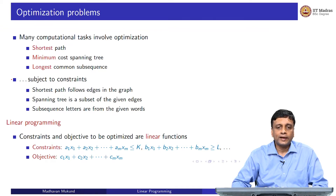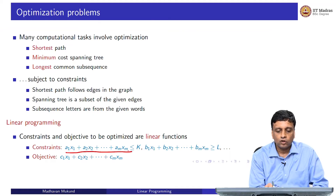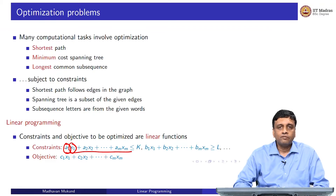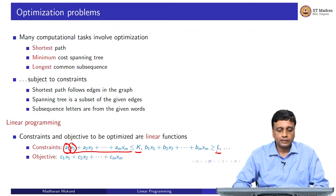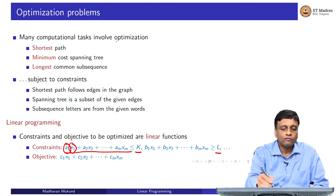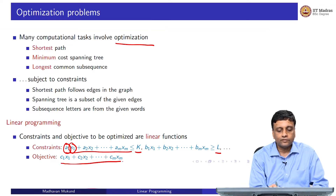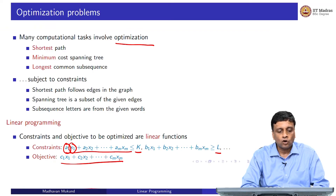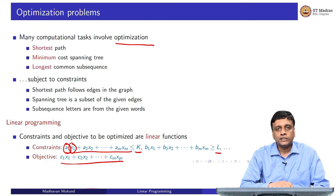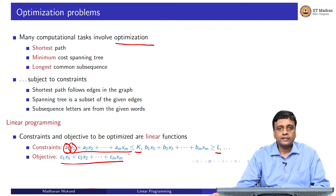Supposing we have input variables x1 to xm, a linear constraint would be of this form: some linear combination with coefficients ai and variables xi, added up together, is either below some value or above some value. The constraint could be a maximum constraint — no more than something — or no less than something. Subject to these constraints, we have to optimize. The optimization is given in terms of an objective, which is another linear function. Some coefficients could be 0, meaning xj does not contribute at all, so cj might be 0. We find optimal values for x1 to xm that optimize the objective.